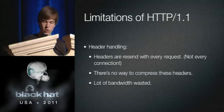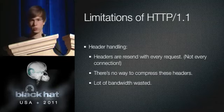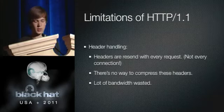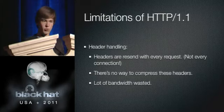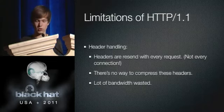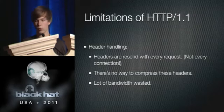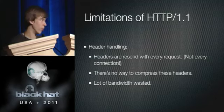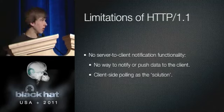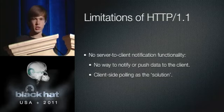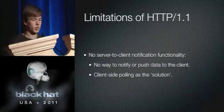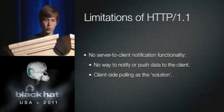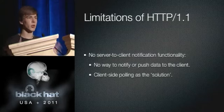Another problem with HTTP 1.1 is header handling. With every request — every image, CSS, or JavaScript request — you are sending the headers again and again. If you have four kilobytes of cookies in your browser, you resend them with every single request. Also, there's no way to compress the headers. We have content compression like Gzip or deflate, but not for headers — that's an overhead of one to multiple kilobytes per request, a lot of bandwidth wasted. Also, with all the Ajax activity, there's no server-to-client notification functionality. The server has no way to tell you that you've got new mail — you have to keep polling and polling the server until it responds.